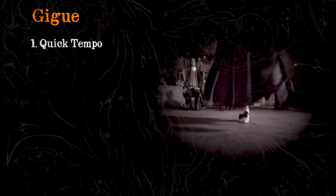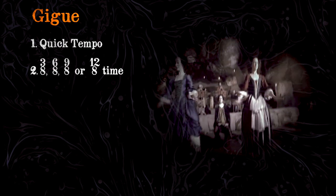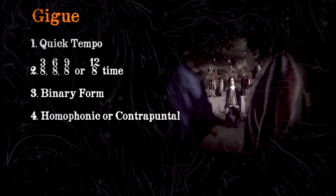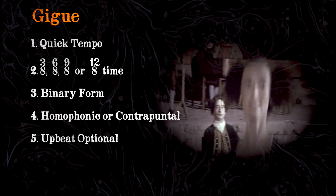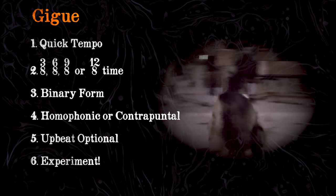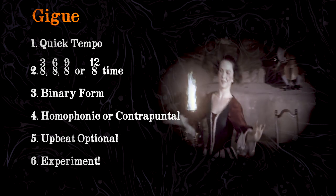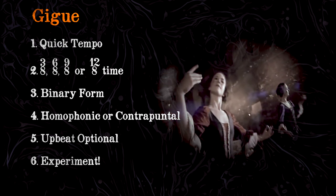Before I get to the conclusion of this video, and ultimately this series, let's do a quick recap. Jigs are quick in tempo. They employ either three-eighth time or the compound meter derivatives thereof. Are written in binary form. Can be either homophonic or contrapuntal in character, or both. Are written with or without an upbeat. Lastly, and something I didn't mention, is that Jigs are there to end your suite. So it's important to experiment a bit. That's why I think the Jig is somewhat more vague than the other forms, because so many composers use it to basically do whatever they want within the form. And I think that's your goal as a composer if you ever write a Jig.